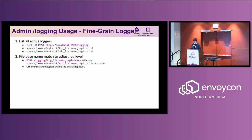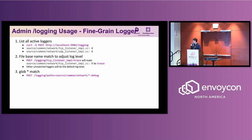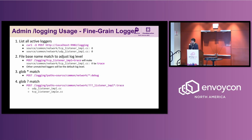The second use case is performing file-based name matching to adjust the log level. For example, you can target a specific file like TCP listener or UDP listener and change it to trace. You can also use glob-style matching — using a star to match any characters in the file name. For example, slash network slash star will match that file tree, and all matched files will be set to debug level. You can also use a question mark to match a specific single character.